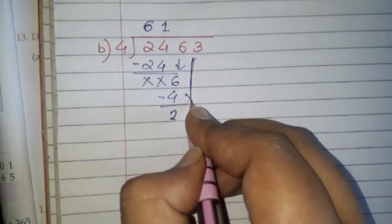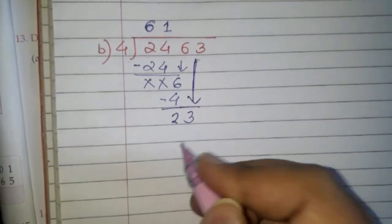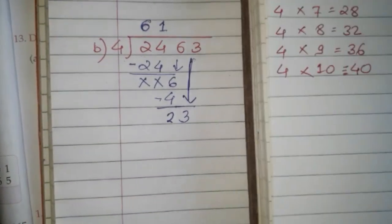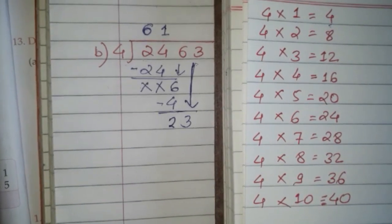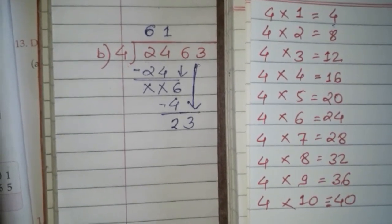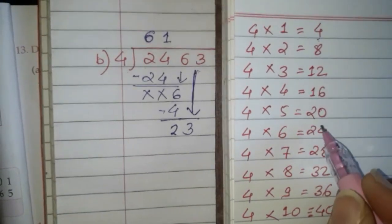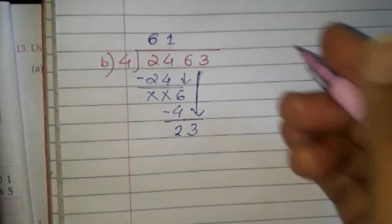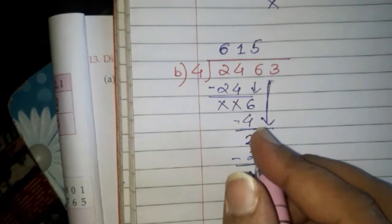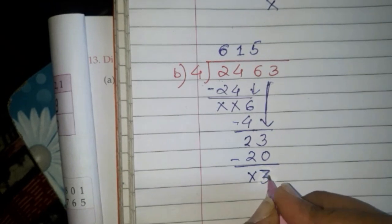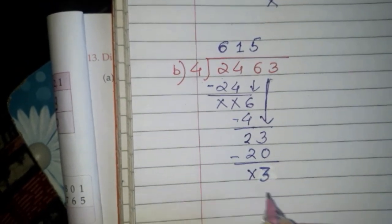We carry down the next number 3 to get 23. We check if 23 is in the table of 4 — no. So we search for the nearest smaller number, which is 20. 4 fives are 20; we write 5 and subtract: 3 minus 0 is 3, and 2 minus 2 is 0. The remainder is 3.